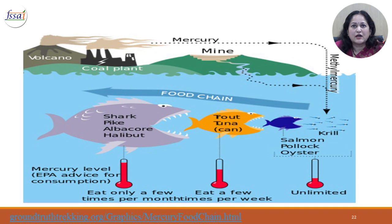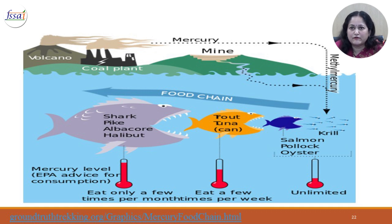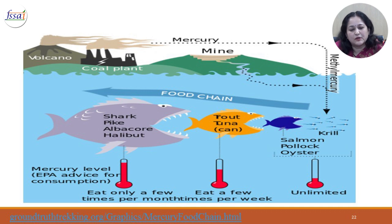This figure shows how mercury enters the food chain. Volcanic eruptions and discharge from coal plants and mines enter the sea water. Mercury in the form of methylmercury is then consumed by krill, algae, and plankton. These are consumed by small fish, which are further eaten by larger fish, and thus mercury moves up the food chain. As it moves up, there is bioconcentration of mercury, and the larger fish end up with much higher levels.